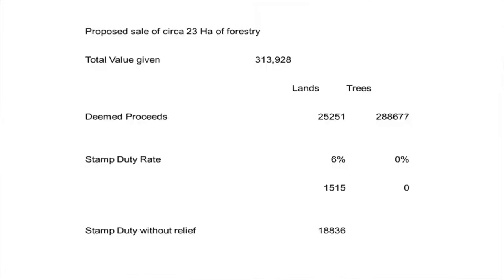I'll just click forward to an example so you can actually see it in black and white. We're looking at the same 23 hectares of forestry, the same split between the lands and the trees. On the trees, 0% is taken into account — it's exempt. Looking at the underlying lands, you're looking at a rate of 6%, coming in at approximately €1,500. Stamp duty without relief is just shy of €19,000. The value of the exemption there is very, very evident.